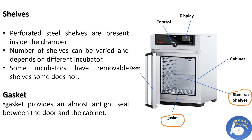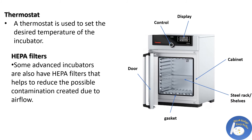The next part is the gasket, which provides an almost airtight seal between the door and the cabinet. This seal prevents outside air from entering the cabinet so the inside hot environment remains undisturbed. The thermostat is used to set the desired temperature of the incubator; after the desired temperature is reached, it automatically maintains that temperature until changed again. Some advanced incubators also have HEPA filters that help reduce possible contamination created due to air flow.